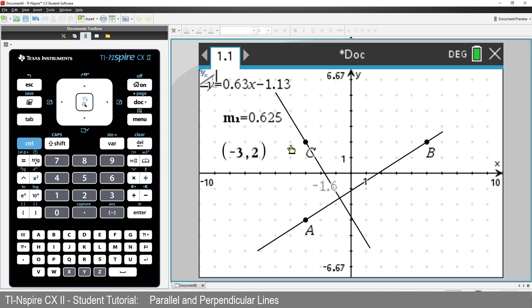Now let's move the original line. Notice that if the original line has a very steep slope, the perpendicular line has a very small slope.